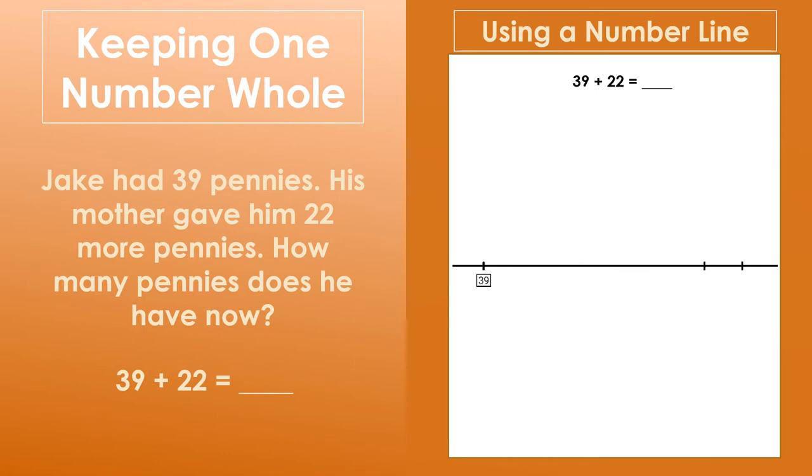We will first add 20. 39 plus 20 equals 59. Then we will add two more. 59 plus 2 equals 61.